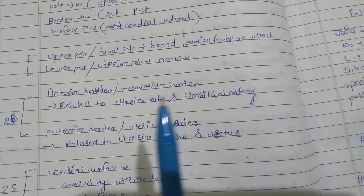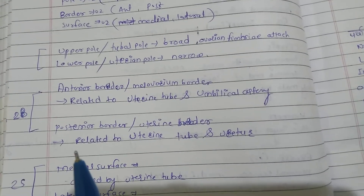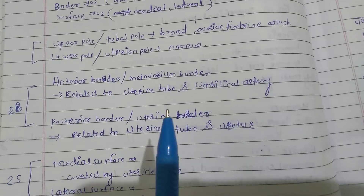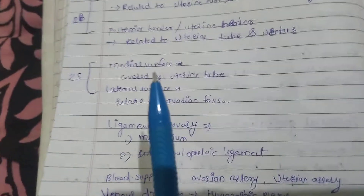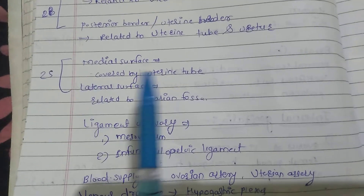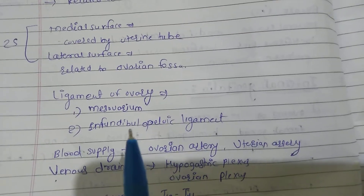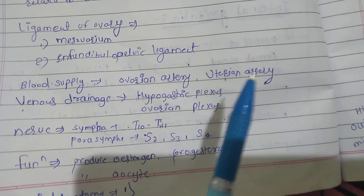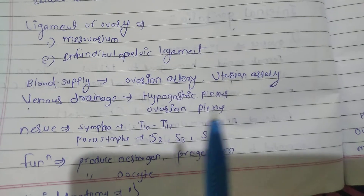The anterior border is the mesovarian border, related to the uterine tube and umbilical artery. The posterior border is the uterine border, related to the uterine tube and uterus. The medial surface is covered by the uterine tube; the lateral surface is related to the ovarian fossa. Ligaments: mesovarium and infundibulopelvic ligament. Blood supply is by the ovarian artery and uterine artery. Venous drainage via the hypogastric plexus and ovarian plexus.